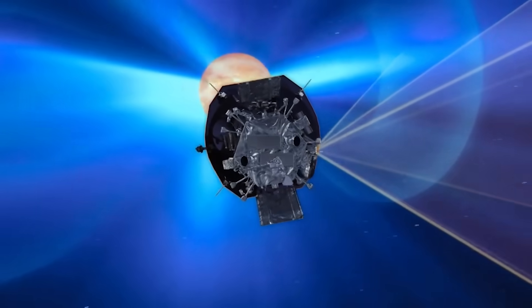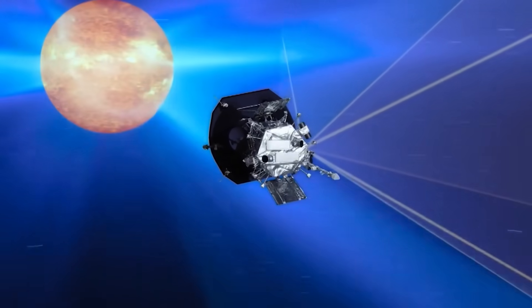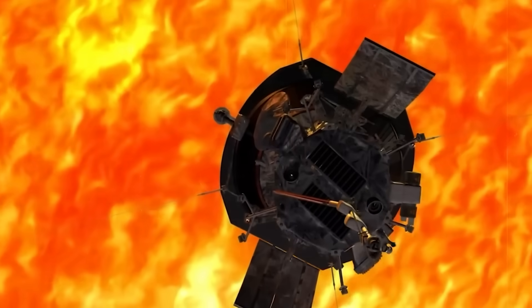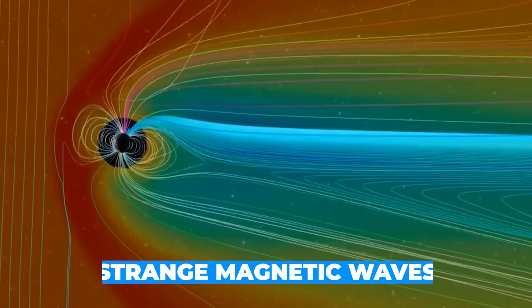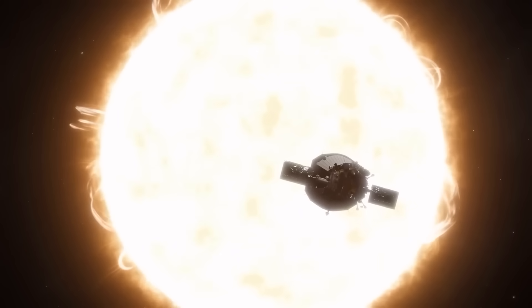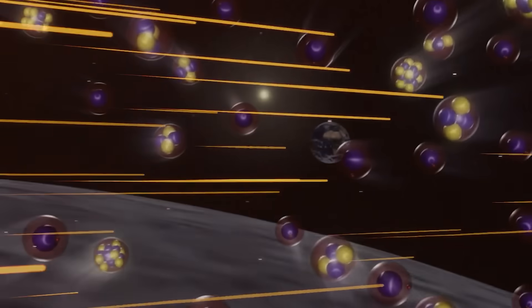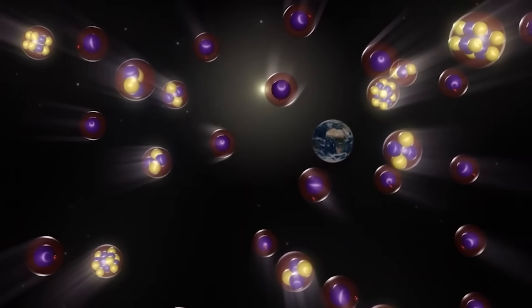But what the Parker Solar Probe just discovered left scientists stunned. As it plunged deeper into the corona, the spacecraft detected strange magnetic waves, unlike anything ever observed this close to the sun. These waves weren't just disturbances. They appeared to be influencing the movement of solar material in ways that defied existing models.